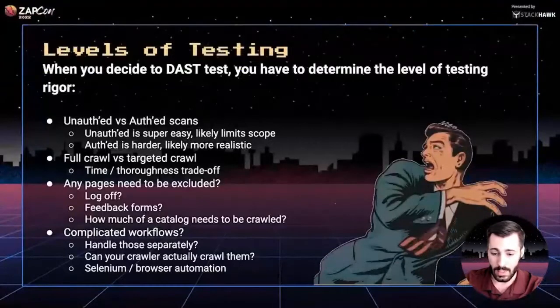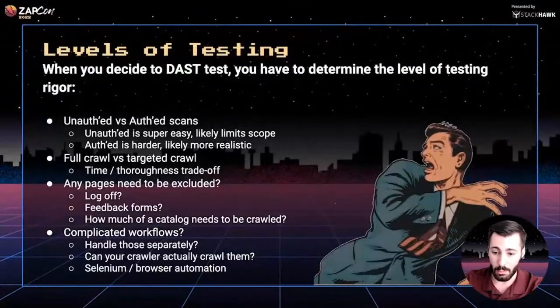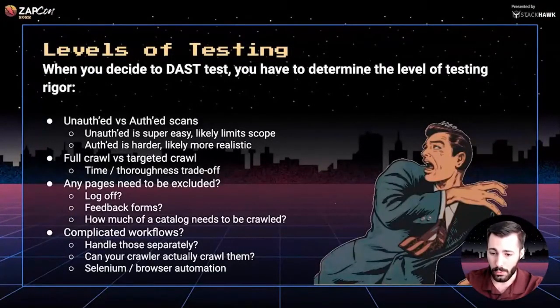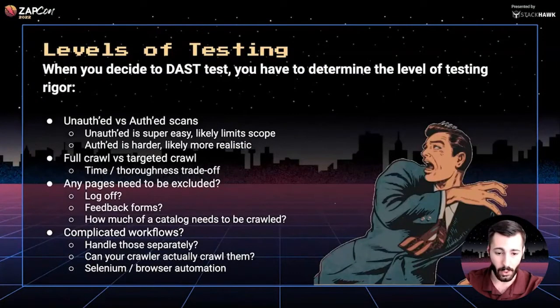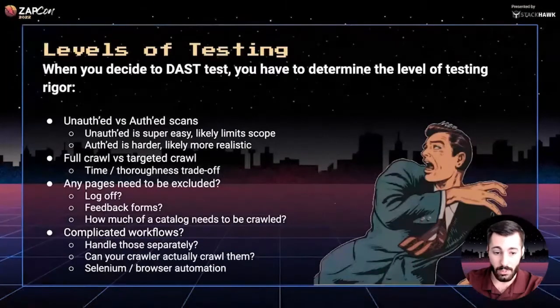Some easy ways to handle complicated site navigation are using browser automation to programmatically click through pages. Examples include Python Selenium, Go's Rod — there's probably a good automation tool for every language.